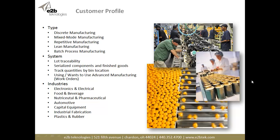The customer profile for this module includes discrete manufacturing, mixed mode, repetitive, lean, and batch process. From a Sage 500 system profile perspective, if you're doing lot traceability extensively, serialized components, serialized finished goods, tracking quantities by bin location, or using the Advanced Manufacturing System within Sage 500 for work orders and work in process, this is a benefit for you. Typical industries include electronics and electrical with heavy serialization, food and beverage, nutraceutical, and pharmaceutical with lot tracking, and automotive and capital equipment with repetitive or cellular manufacturing requiring multiple issues at one time.